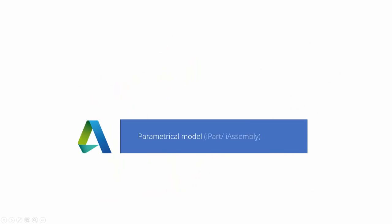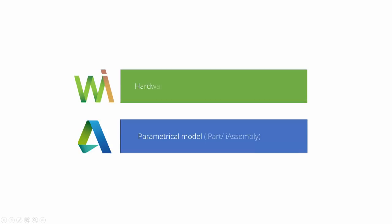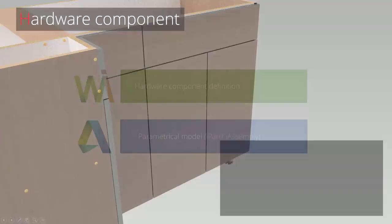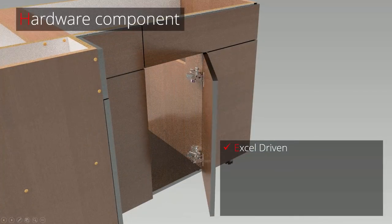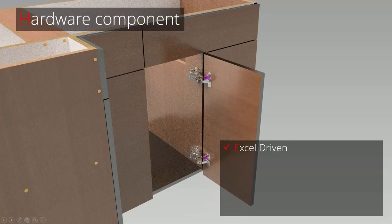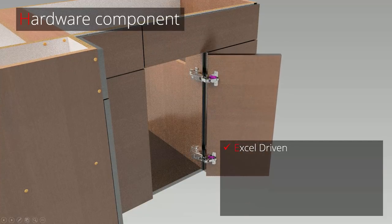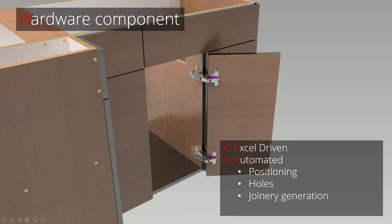First of all, each hardware item includes a parametrical model designed in Autodesk Inventor, combined with a Woodwork for Inventor definition. Parameters that change the geometry of a component can be easily managed through Microsoft Excel — you can make hundreds of configurations within minutes. Woodwork for Inventor allows you to add positioning instructions as well as joinery information, guaranteeing that holes will be perfectly aligned, drastically reducing human factor error.